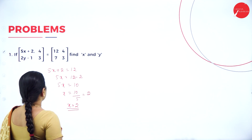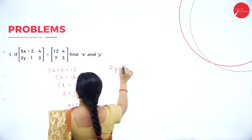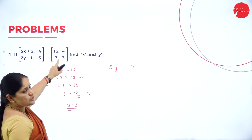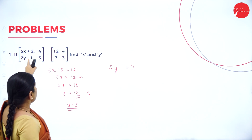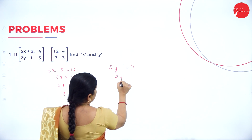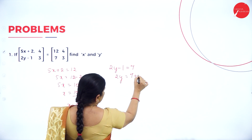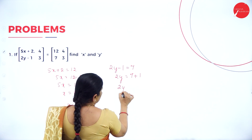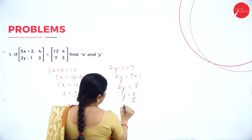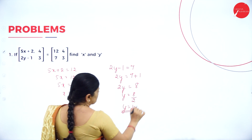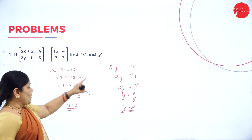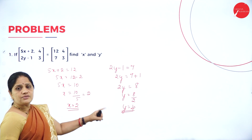Now the next one: 2y minus 1 equals 7, so we have to find the corresponding element. So 2y minus 1 equals 7, therefore 2y equals 7 plus 1, 2y equals 8, y equals 8 by 2, y equals 4. So we know our x and y: x equals 2, y equals 4.